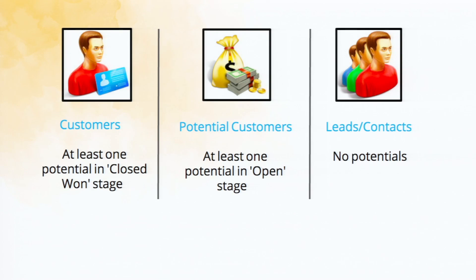The first category is customers — if a visitor is online with at least one closed-won potential, they will be considered a customer. Then potential customers — people who have at least one open potential associated with them. And then there are leads and contacts. There is actually a fourth category: unknown visitors — people who are totally new to your CRM system. Zoho SalesIQ tracks visitors online in real time, and Zoho CRM has all the information about the relationship between that visitor and you as a business.